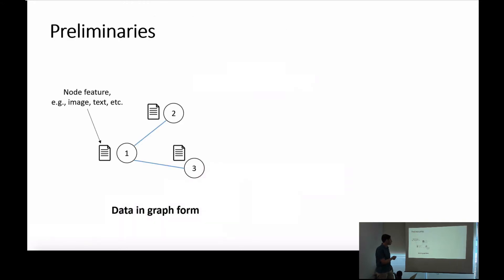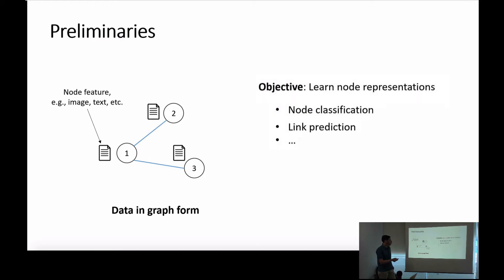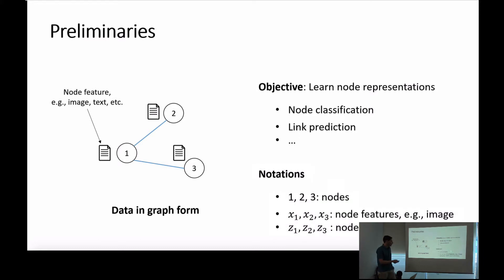We have a graph, probably with some features such as document images, and we seek to perform tasks like node classification or link prediction based on this graph information. The point is to use both the graph structure and the features associated with each node. The node features x1, x2 are used as inputs, and what we seek to learn is some kind of node representations, which we call z, to be used for these tasks.